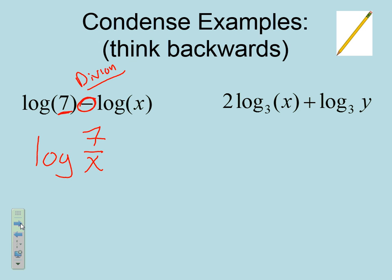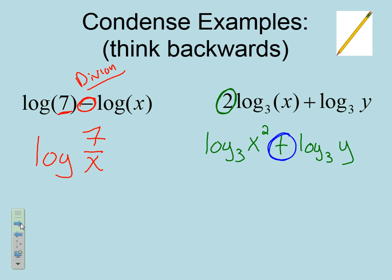This next example is a two-step process. First, I notice I have multiplication by 2 — that's going to turn into an exponent. So I rewrite it as log base 3 of x to the second power plus log base 3 of y. Now I can see I'm adding, which means I'm going to multiply my variables. Condensing those, I get log base 3 of x squared times y. That's my final answer.